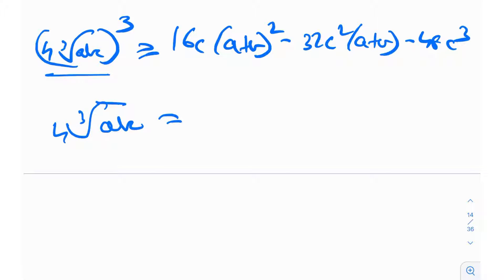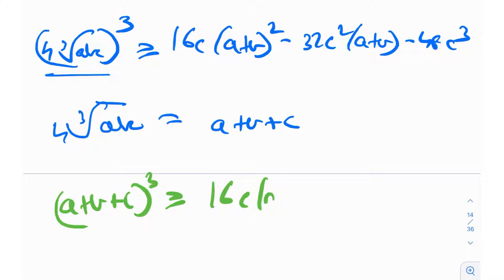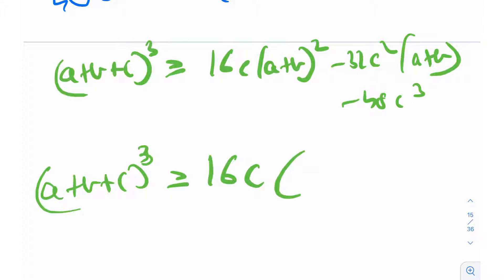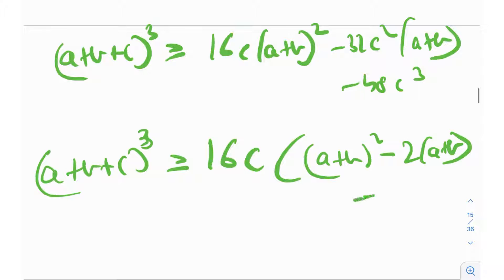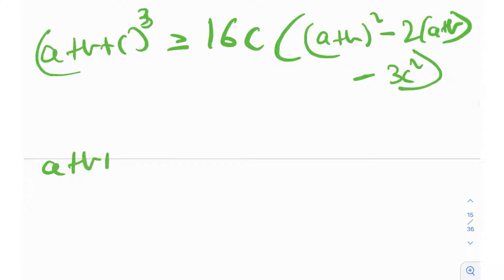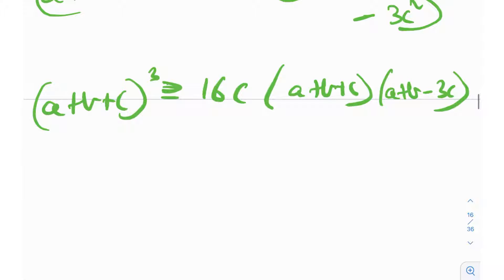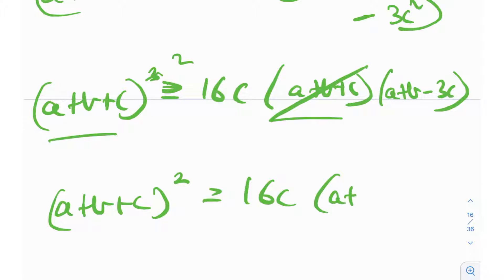So we need (a+b+c)³ ≥ 16c(a+b)² − 32c²(a+b) − 48c³. Factoring the right side by taking 16c common: 16c[(a+b)² − 2c(a+b) − 3c²] = 16c(a+b+c)(a+b−3c). Dividing both sides by (a+b+c), we reduce to proving: (a+b+c)² ≥ 16c(a+b−3c).